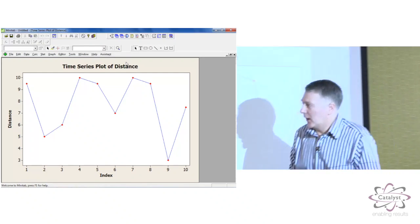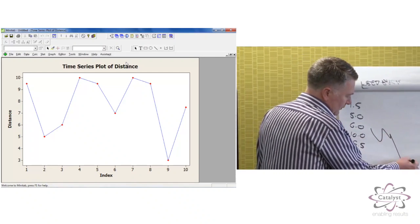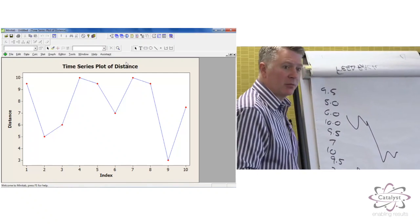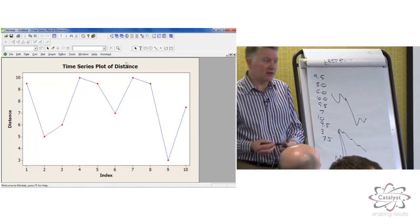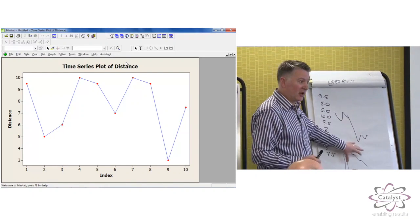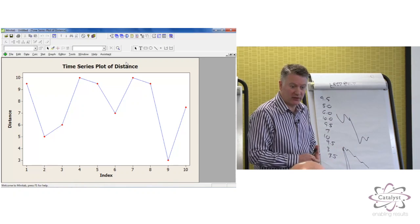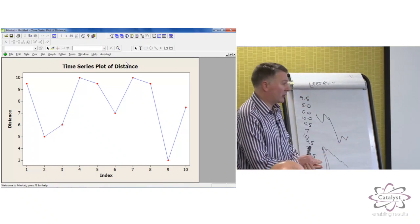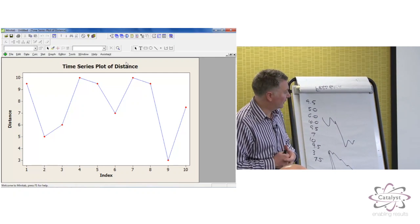This is where we might see patterns like shifts in the process, or trends in the process, or extreme values in the process. And all of those things are very strong, clear signals, and we don't need any SPC to tell us that those things are happening. But it's whenever the signals get a little bit more subtle that SPC becomes very useful for telling us how our process is performing.